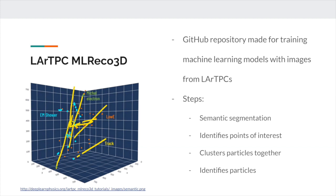The final step, identifying particles, labels the clusters as tracks, showers, delta electrons, delta rays, or low energy particles.